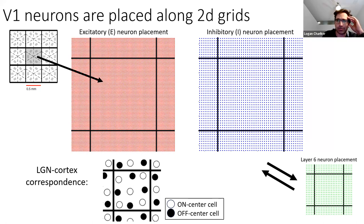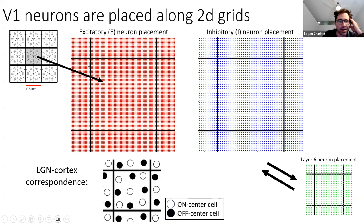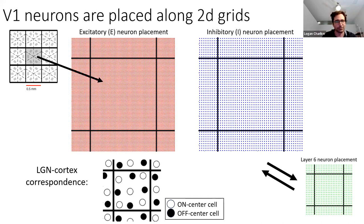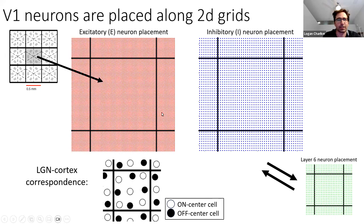These numbers in the model are roughly proportional to the real numbers, though in more recent data we think the numbers should be a little bit higher. Also, this is just one layer — 4C alpha and layer 6. If you take all of the neurons in one hypercolumn going through all the layers, it's even more.